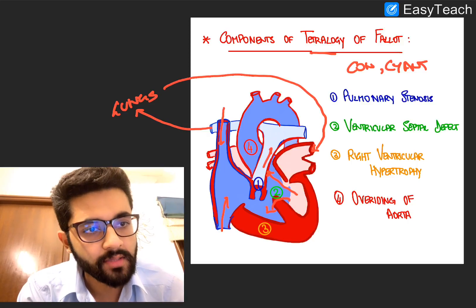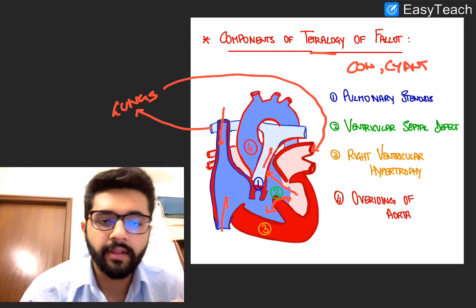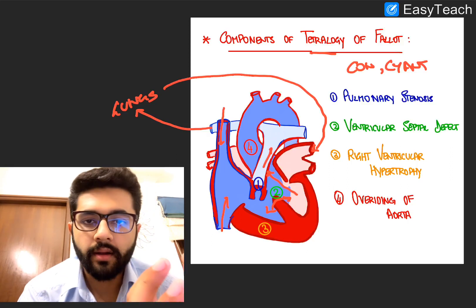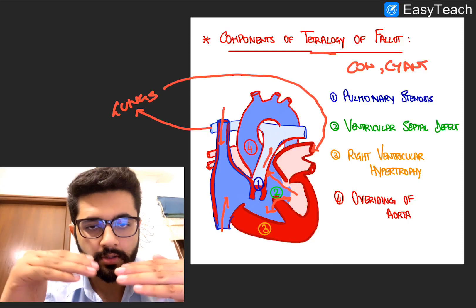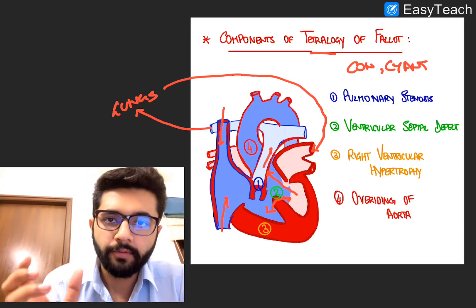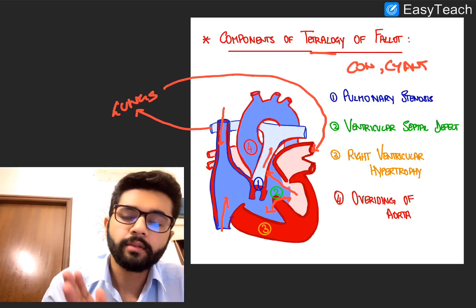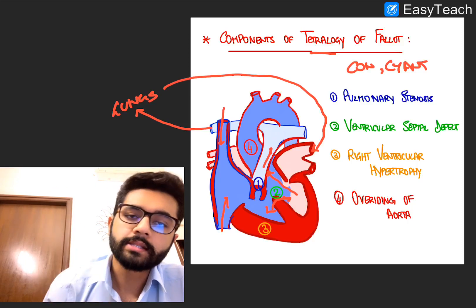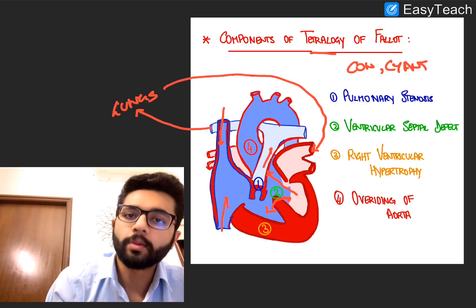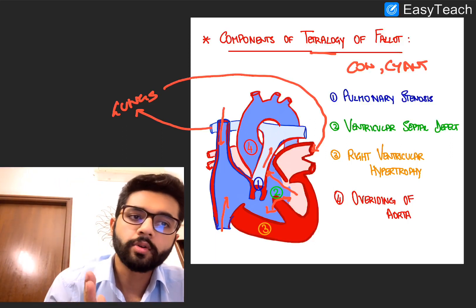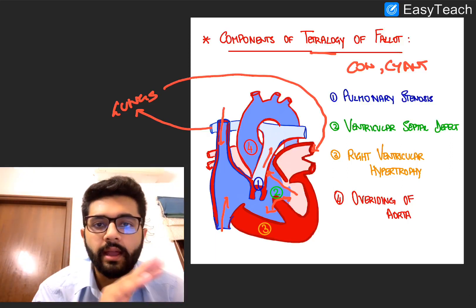The second defect is the VSD, or Ventricular Septal Defect. There is a defect in the ventricular septum, and blood from the right heart can then move to the left heart — so there is mixing of blood. Because blood from the right heart can no longer go towards the lungs due to pulmonary stenosis, it starts moving into the left heart. It's a fluid; when the heart pumps, it has to go somewhere. So it starts moving towards the left ventricle.